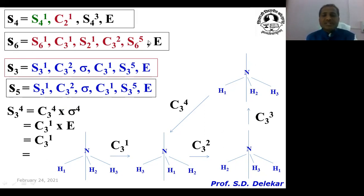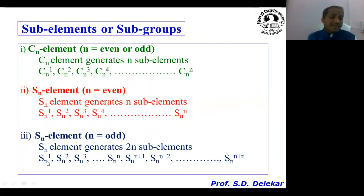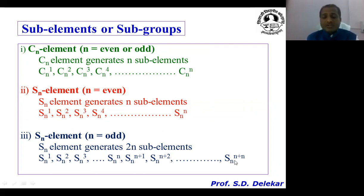So S6 generates these six subelements. Now, for the Sn element when n is odd — such as S3 or S5 — each Sn element generates 2n subelements. In the previous even cases there were only n subelements, but when n is odd, if n equals 3 there are 6 subelements, and if n equals 5 there are 10 subelements. These run from Sn¹, Sn², ... Snⁿ, then Snⁿ⁺¹, Snⁿ⁺², up to Sn²ⁿ.